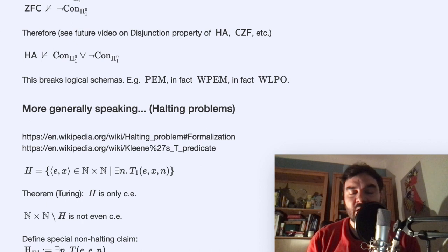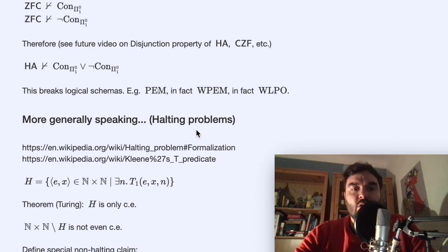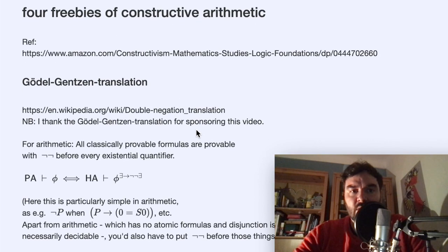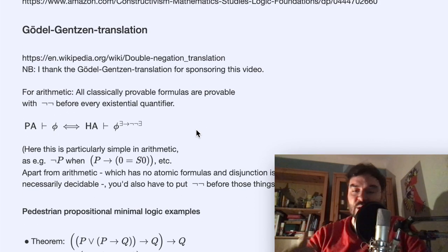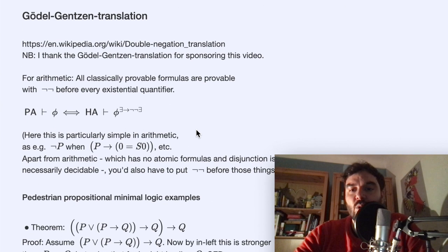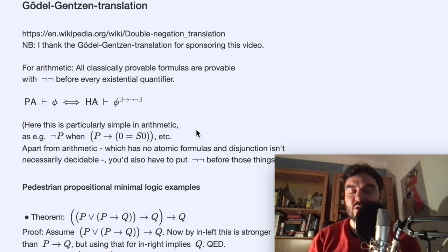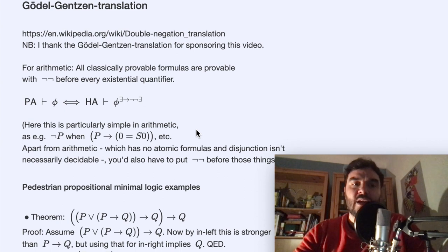I call these 'freebies' because these are results that grant you a bunch of theorems you might be familiar with from the classical theory of Peano arithmetic, but they also hold if you don't use excluded middle. In the end we are also going to discuss where the border is — where the magic starts with classical logic and why.